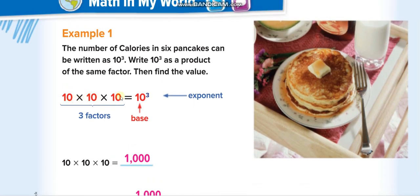Let's say you have 3 tens to multiply. You can write it in a simple way: 10 has a power of 3. It actually means 10 times 10 times 10 — three factors, so the power is 3. When you multiply: 10 times 10 is 100, and 100 times 10 is 1000.